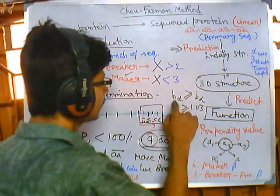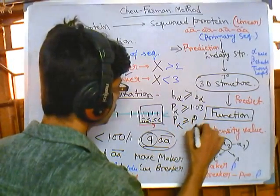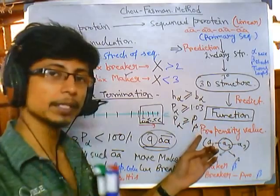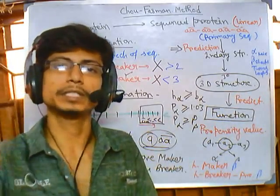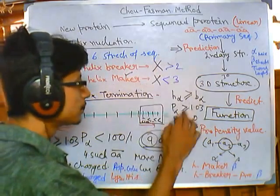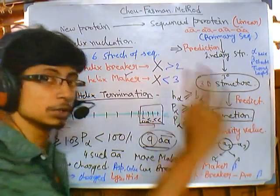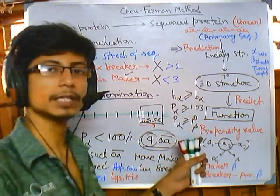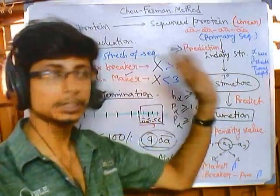Additionally, the propensity value for alpha helix for the amino acid must be greater than or equal to the propensity value for the beta sheet. We need to calculate both the propensity for alpha helix and for beta sheet for all amino acids, and check which is higher. So the three criteria are: more helix makers than breakers, propensity value ≥ 1.03, and the propensity for alpha helix must be higher than the propensity for beta sheet. These are the rules to get secondary structure from a primary sequence using Chou-Fasman method.